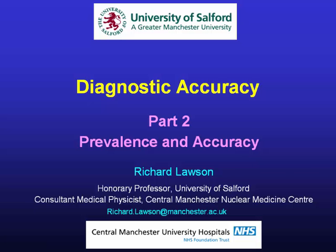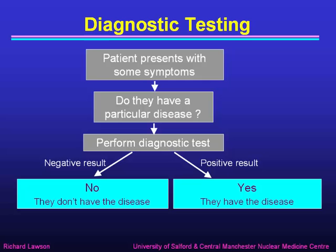This is part two of my lecture on diagnostic accuracy, where I'm going to explain prevalence and accuracy. In diagnostic testing, we have a patient who presents with some symptoms of disease, and we want to ask the question: do they have this particular disease? We perform a suitable diagnostic test, and a negative result means no, they don't have the disease, while a positive result means yes, they do.